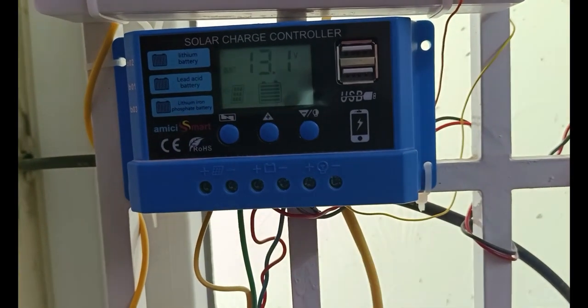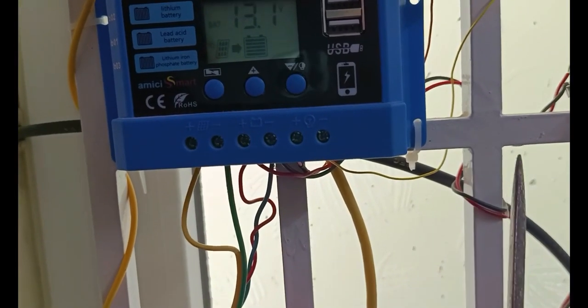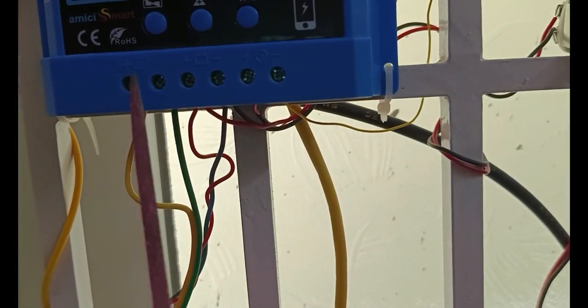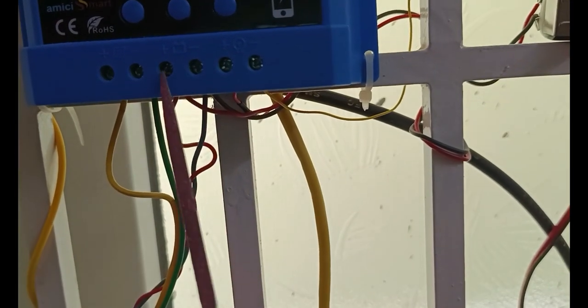It has many battery chemistry types and it has three terminal blocks. One is for solar input connection, second one is battery terminal connections, third one is for LED light connection.